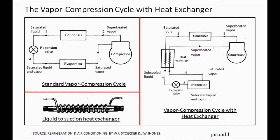That is the difference of the vapor compression cycle with heat exchanger. This is the heat exchanger — sometimes it looks like this. The tube coils around inside. Since both coils are in contact, one type of refrigerant flows inside the tube and the other is on the outside, so there is an exchange of heat between them. This is the liquid-to-suction heat exchanger.